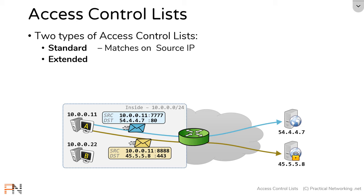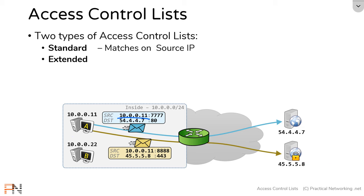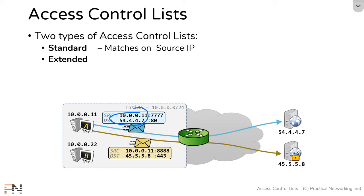This does create a limitation because it only allows you to provide complete trust or complete distrust. For example, if you had a requirement to allow host A to speak to the top server but not the bottom server, with a standard access list all you can do is either permit the source IP address 10.0.0.11 — in which case host A can speak to both servers — or deny that IP address entirely, meaning host A cannot speak to any server. That is the limitation of a standard access list.